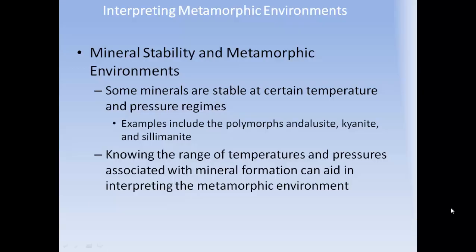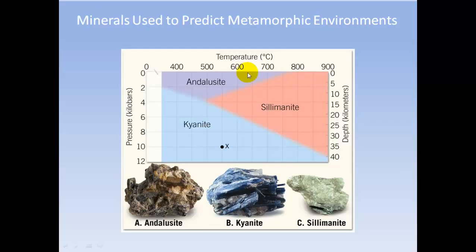Interpreting metamorphic environments: mineral stability helps determine conditions of formation. Examples include the polymorphs andalusite, kyanite, and sillimanite — all with the same chemical composition but forming different crystal shapes. In a regime of high pressure and intermediate temperature, kyanite will form, appearing as a bladed blue mineral. Andalusite forms at low pressure and lower temperatures, and sillimanite at higher pressure and temperature. Knowing the temperature and pressure ranges associated with mineral formation aids in interpreting the metamorphic environment.